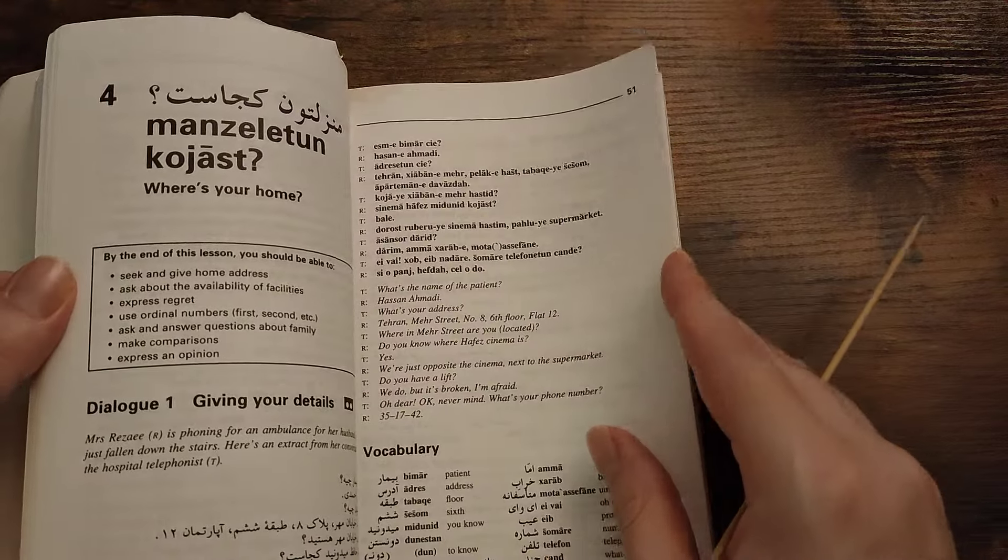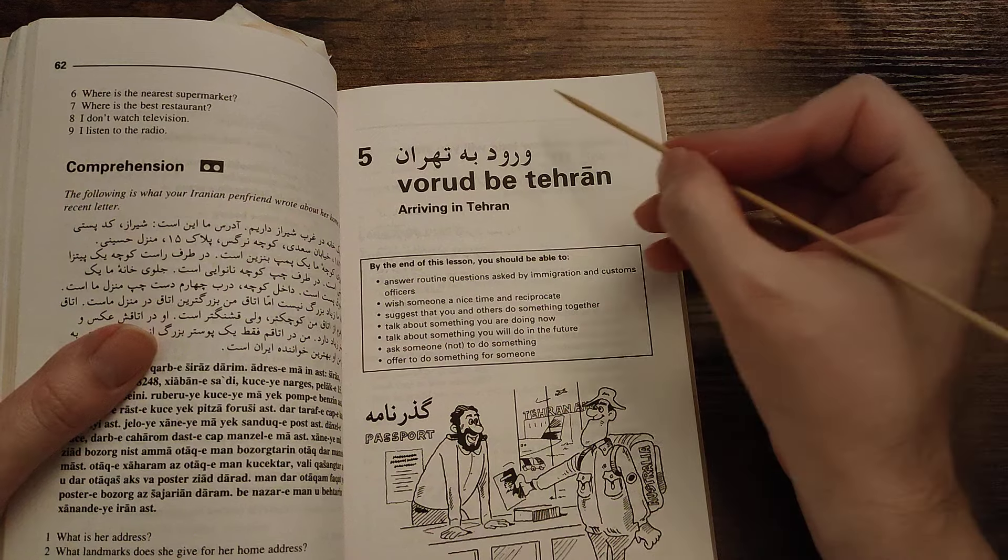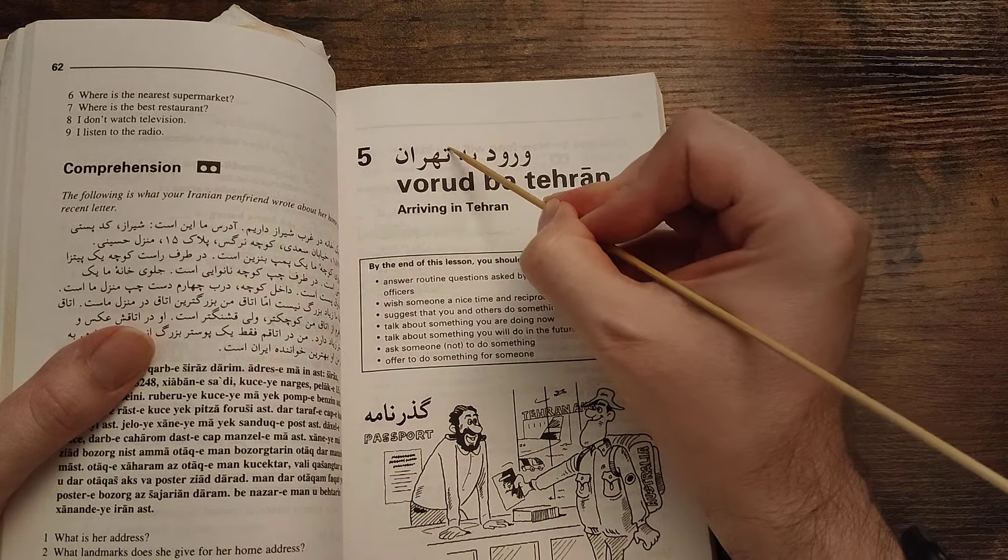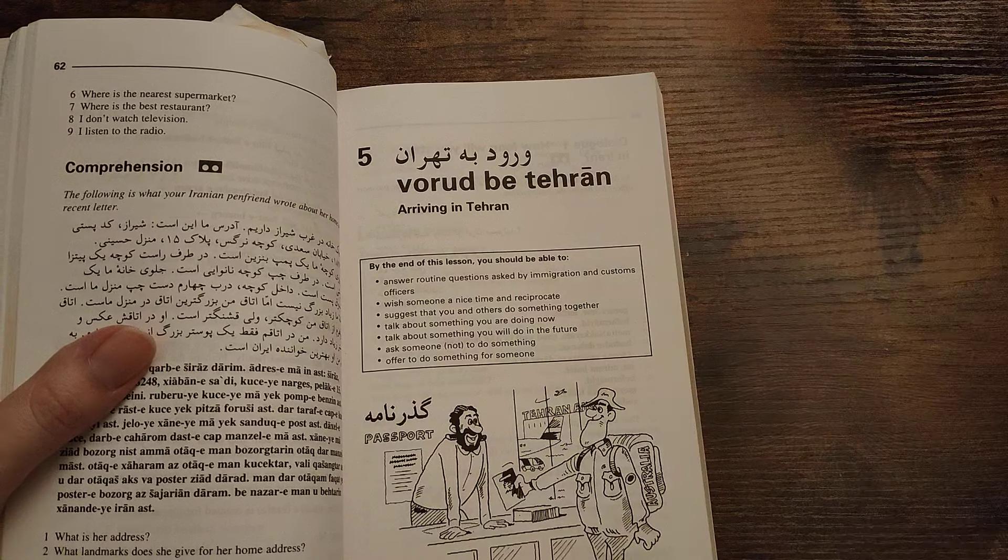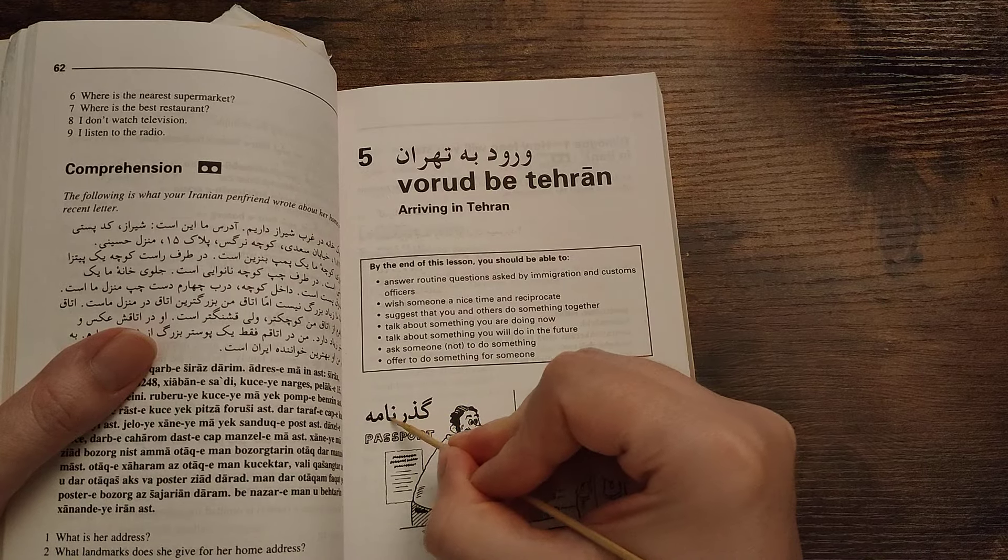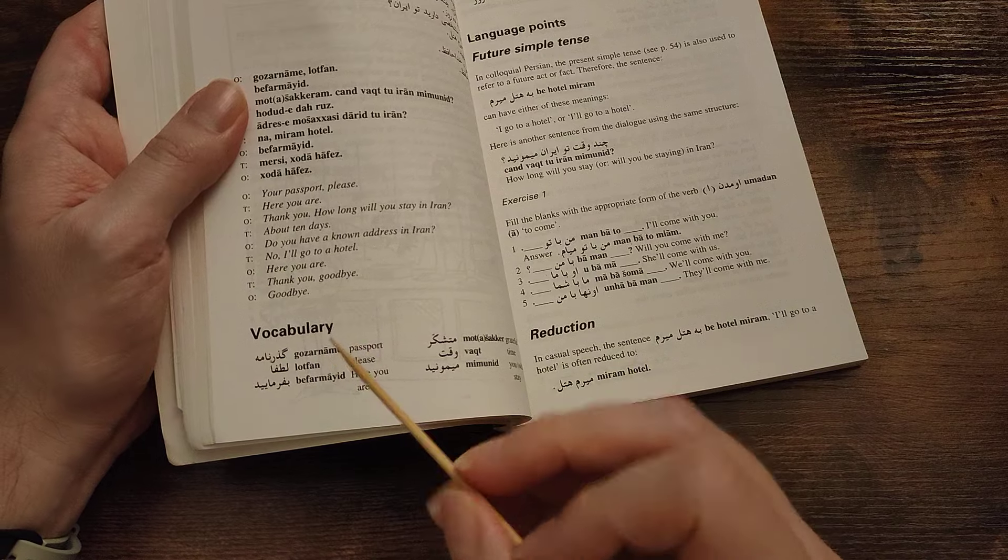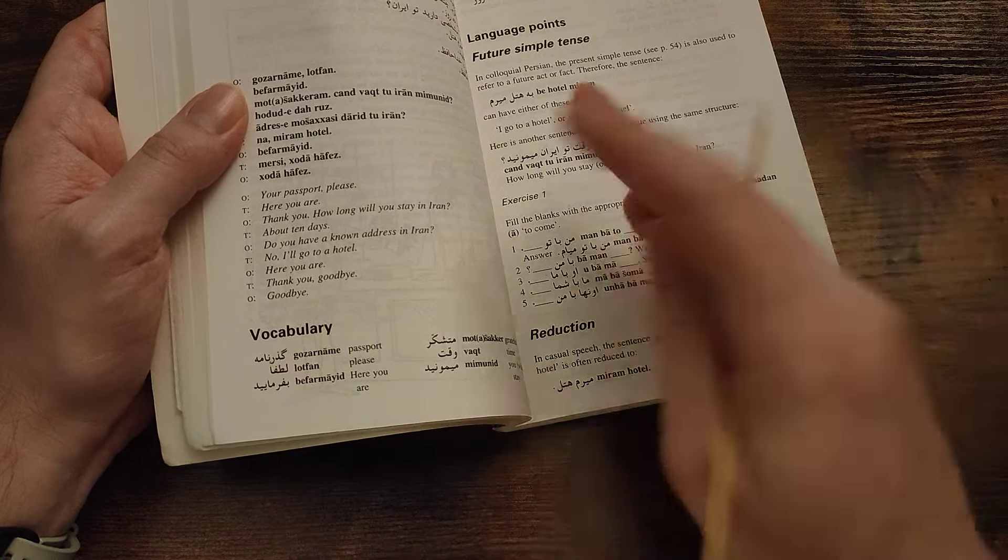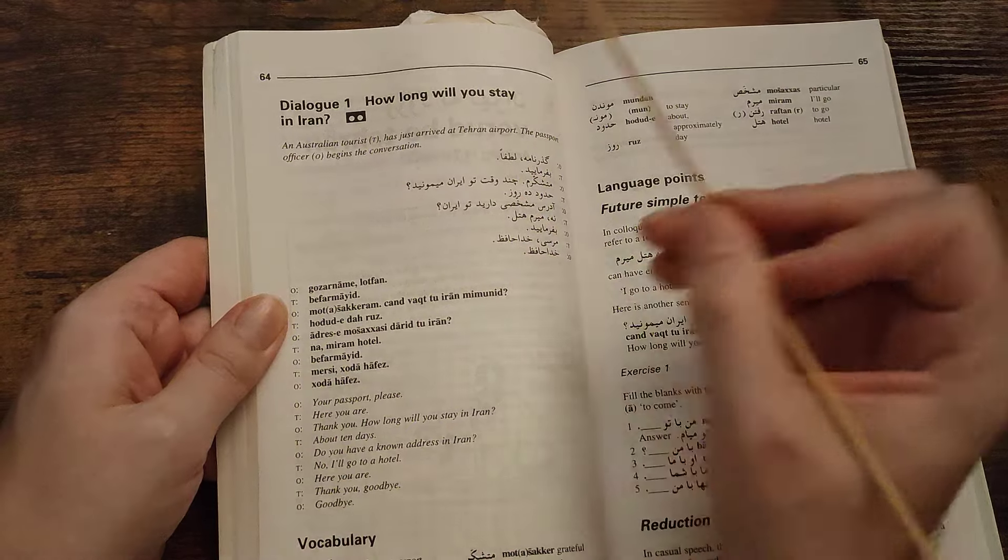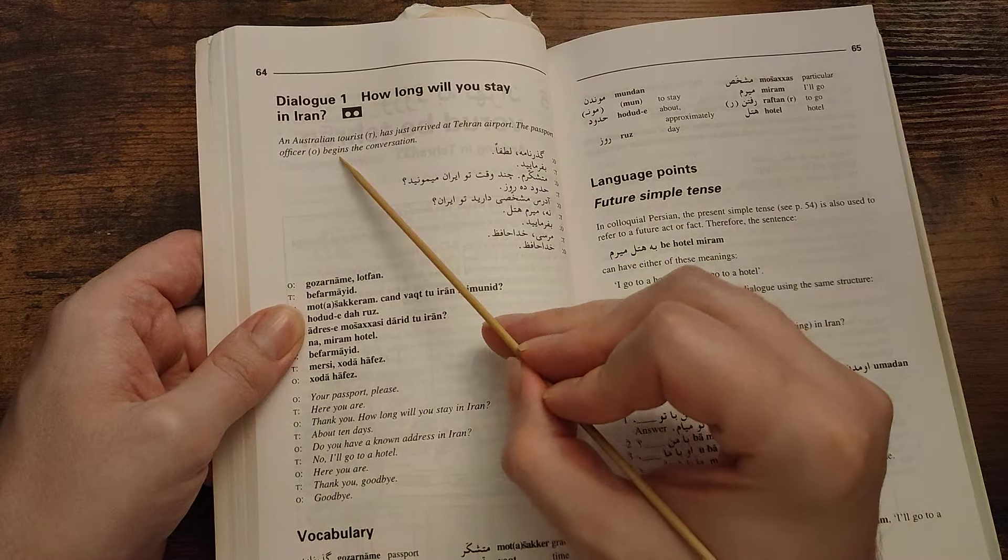I think we'll do this one. Vorud be Tehran. Vorud be Tehran. Arriving in Tehran. It says here, dialogue one: How long will you stay in Iran? An Australian tourist has just arrived in Tehran airport. The passport officer begins the conversation.